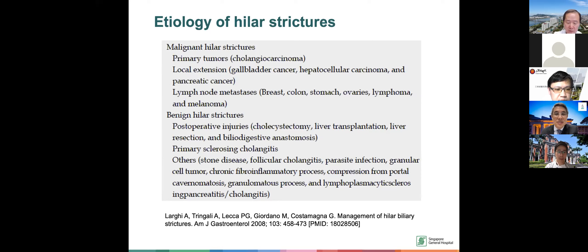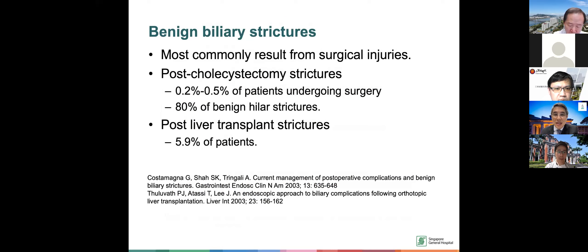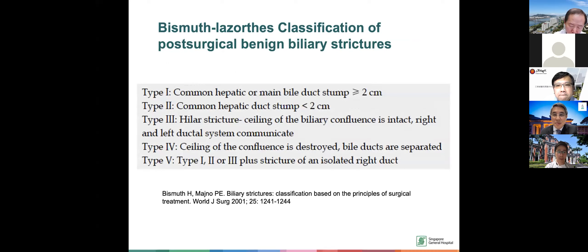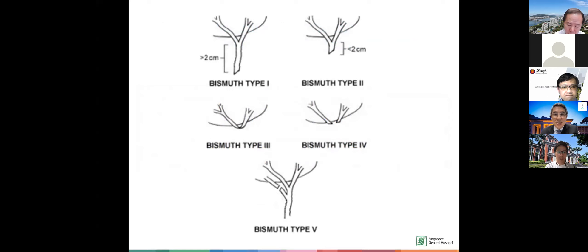When we go through benign biliary strictures, what we usually mostly see are surgical injuries. Post-cholecystectomy accounts for about 80% of them, and the rates can be as high as about 0.5% of patients undergoing cholecystectomy. For post-liver transplant, about 5.9% will have hilar strictures. The original classification by Bismuth focuses on the level of healthy biliary mucosa to determine location — type 1 through type 5, with type 5 being the isolated right duct.